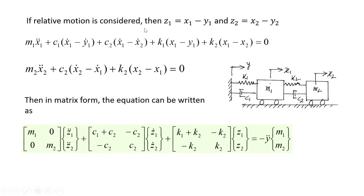If relative motion is considered, let z1 = x1 minus y and z2 = x2 minus y. Since z1 = x1 minus y, we write x1 = z1 + y and x2 = z2 + y, where y is the base displacement. Substituting into the equations of motion, note that x1 minus x2 = z1 minus z2. Then x1-double-dot becomes z1-double-dot plus y-double-dot, and c1(x1-dot minus y-dot) simplifies to c1·z1-dot; k1(x1 minus y) becomes k1·z1.